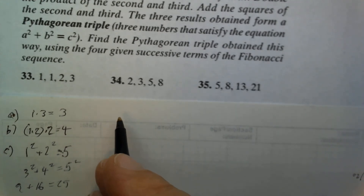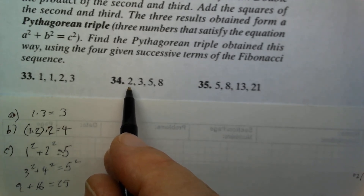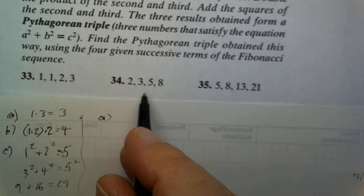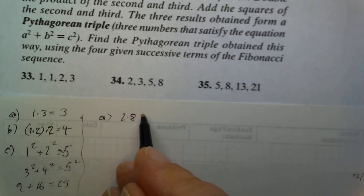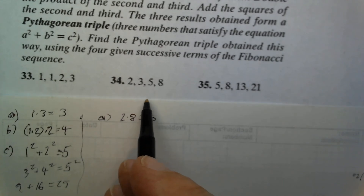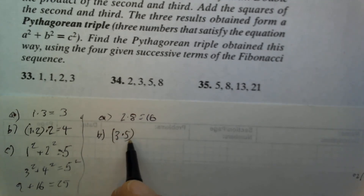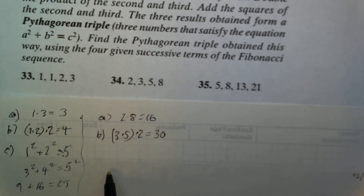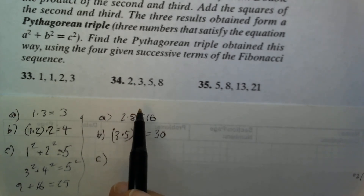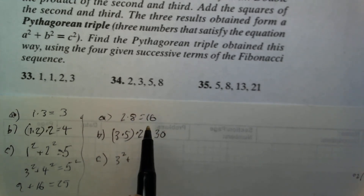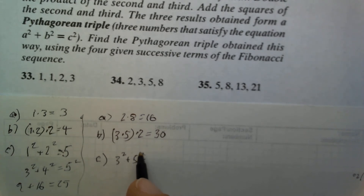For number 34, we multiply the first times the fourth term: 2 times 8 equals 16. Then we multiply the second times the third and double it: 3 times 5 times 2 equals 30. Then we take the squares of the second and third terms: 3 squared plus 5 squared equals 9 plus 25, which equals 34.